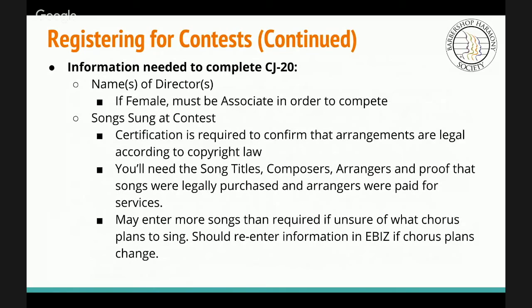The information needed to file the CJ20 is straightforward. You need the names of the directors — note that female directors must be an associate in order to compete. You also need the songs you'll be singing at contest. Certification is required to confirm arrangements are legal according to copyright law. You'll need song titles, composers, arrangers, and proof the songs were legally purchased and arrangers were compensated. You can enter more songs than required if unsure, and should re-enter information in eBiz as soon as plans are confirmed or change.